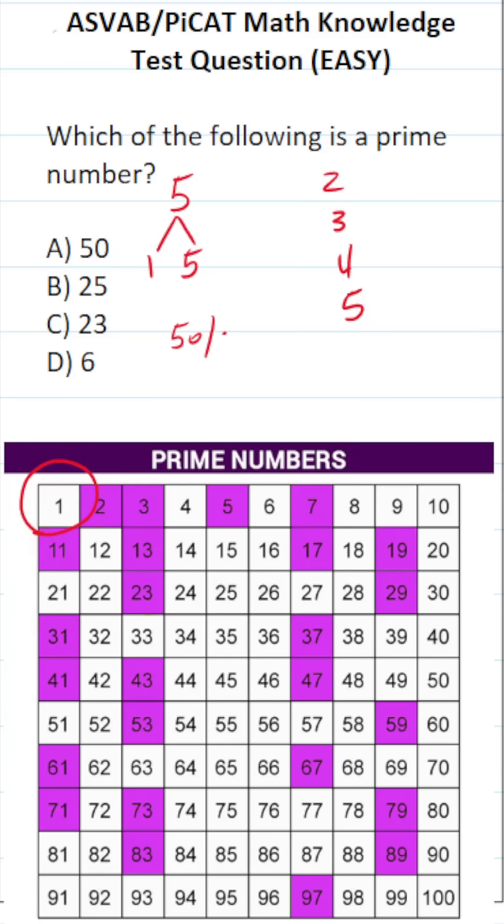You should know 50 is divisible by 2. 50 divided by 2 is 25. Therefore, it can't be prime.